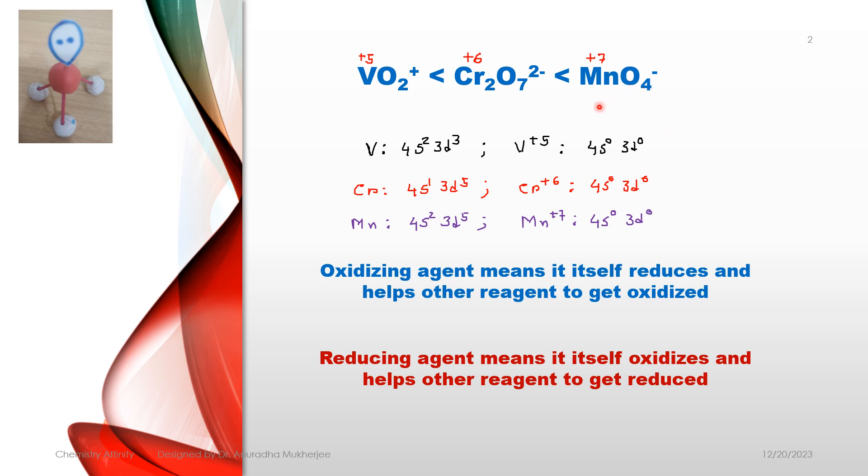Usually MnO4- manganese plus 7 reduced to manganese plus 2. Cr2O7^2- chromium plus 6 reduced to chromium plus 3. And VO2+ vanadium plus 5 reduced to vanadium plus 4.